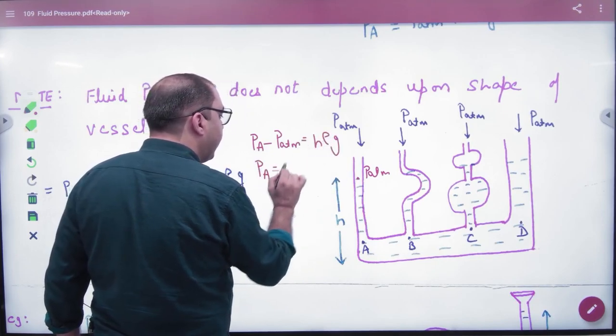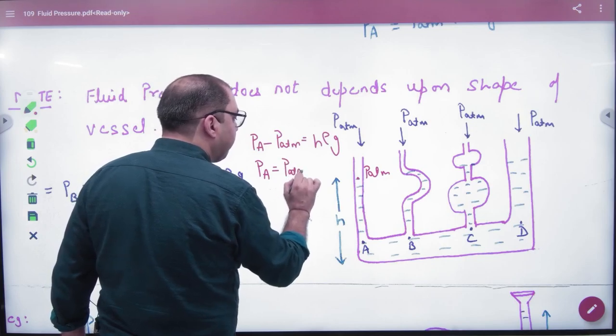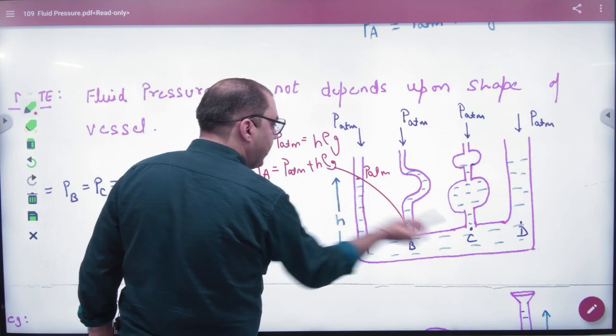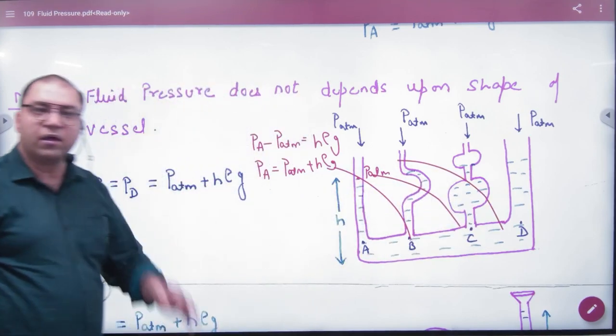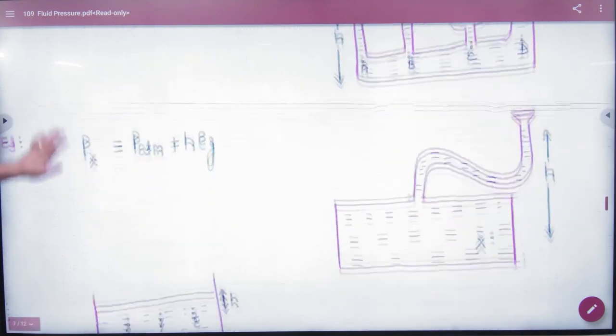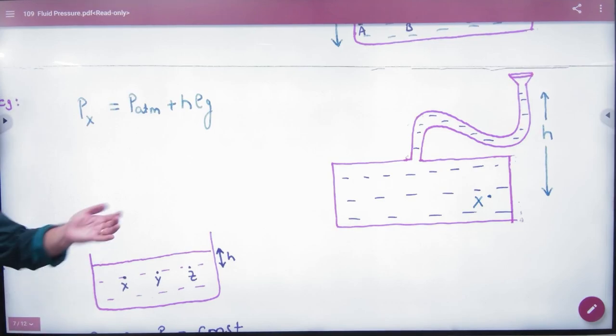So what will the value of P of A? P atmospheric plus H rho G. Similarly, B's story is the same. C's and D's story is the same. It doesn't matter. It doesn't matter. Is it clear here? So you have to mark this answer. Even if such a question comes. Look, the pipe is going to be a little bit. Let us know.